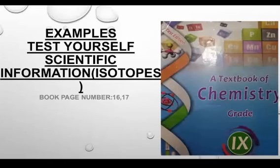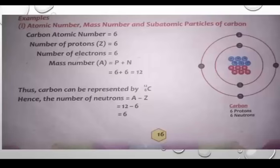Bismillahirrahmanirrahim. Students, today we are going to discuss some numerical examples related to atomic number, mass number, and subatomic particles of different atoms. The atoms we are going to discuss today are carbon, oxygen, and uranium. Atomic number and mass number were discussed in the previous lecture in detail, so all of you must watch the previous lecture for better understanding of today's lecture.